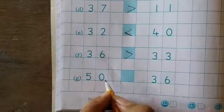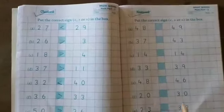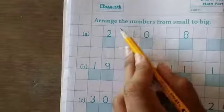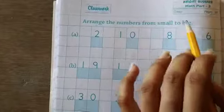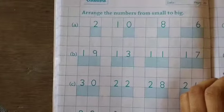This is your classwork and this is your homework. Do at your home. Then on page number 39. This is a concept of ascending order. Arrange the numbers from small to big. That means order ascending. Okay.